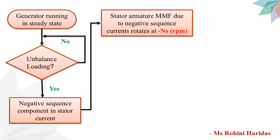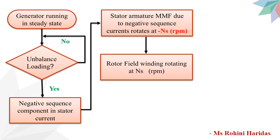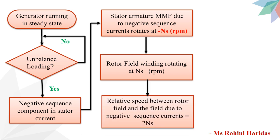Here the negative sign is used to show the opposite direction. We know that the rotor field winding is also rotating at synchronous speed. So we have to consider two speeds: the first is the rotor field speed, that is plus NS, and the second is the stator armature MMF rotating at NS but in the opposite direction. Therefore, the relative speed between the rotor field and the field due to the negative sequence current is twice NS.